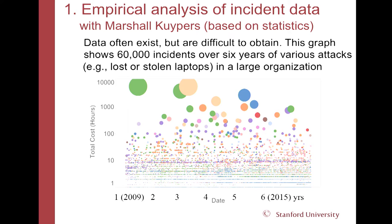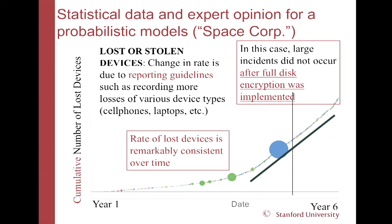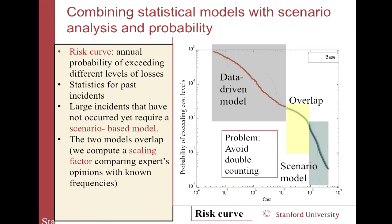So first, the empirical analysis of the data we had. On this axis, what I show over six years is all the incidents — small dots when they were not too serious, big dots when they were really more serious for Space Corp. What's important on this graph is the cumulative record of attacks and losses incurred. The rate of attacks is relatively constant, contrary to what I had heard. And in fact, after full disk encryption, they didn't have any big attacks. So it worked for them so far.